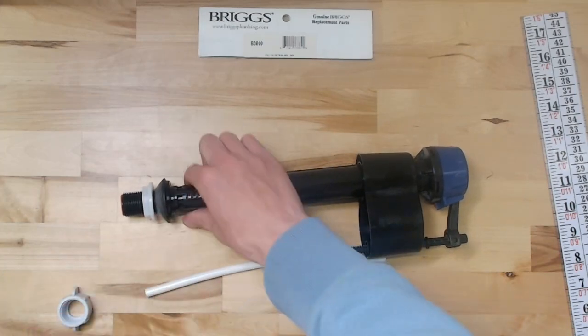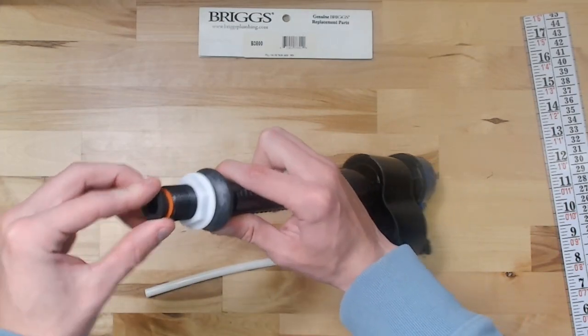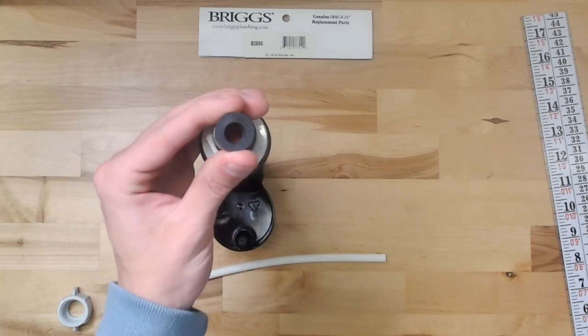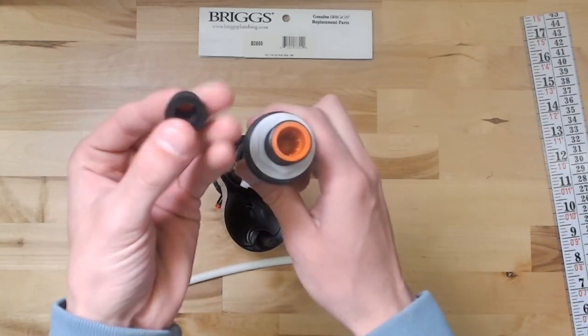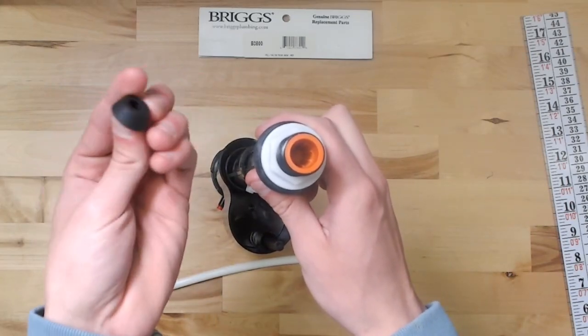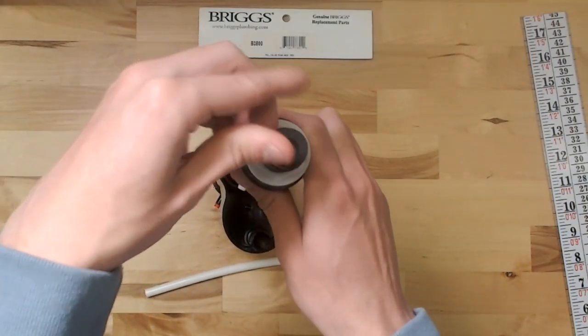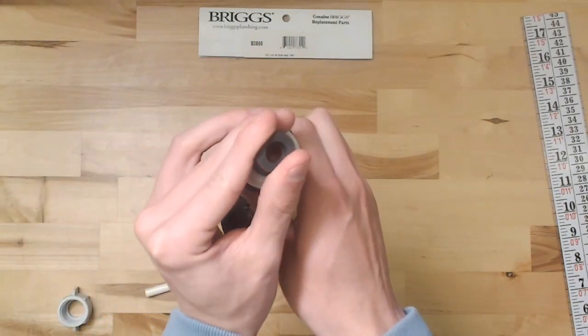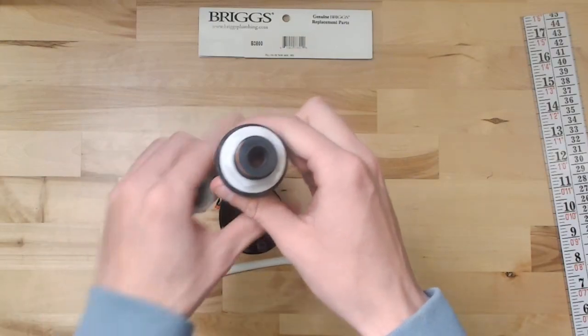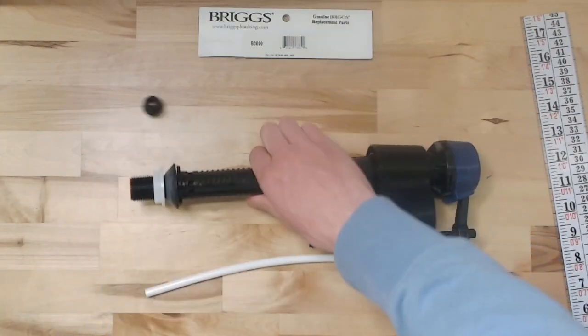The way these would go is this washer would go on there like that. You can see how it's shaped. This end goes down.